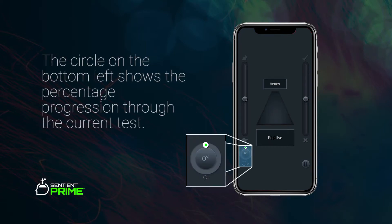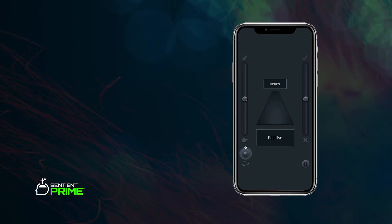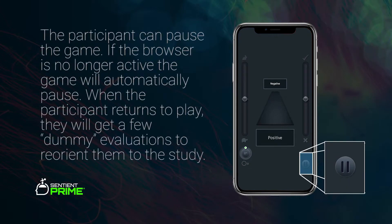The circle on the bottom left shows the percentage of progression through the current test. If necessary, the participant can pause the game. If the browser is no longer the active window, then the game will automatically pause. When the participant returns and clicks play, they will be served up a few dummy evaluations to re-socialize them to the active test.